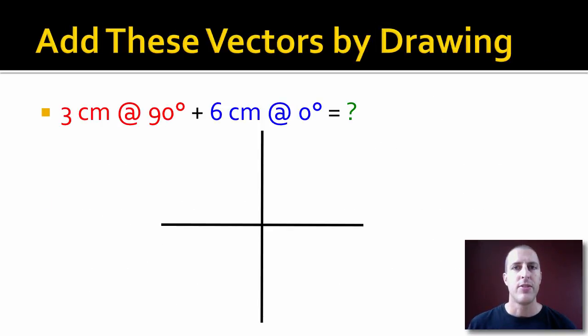Let's add these two vectors by drawing. The first vector, three centimeters at ninety degrees, is the red vector. It would look like this. Our second vector, the blue vector, six centimeters at zero degrees, we draw that. Now we need to move the blue vector onto the tip of the red vector. Vectors don't have a location, so you're allowed to move them all you want. Just don't change the direction or the length.